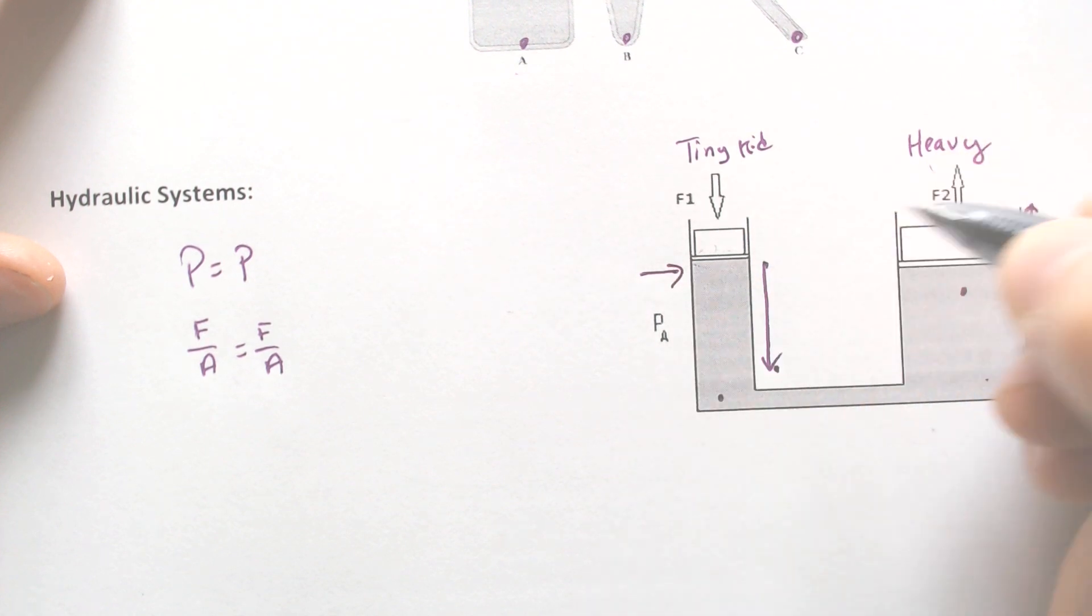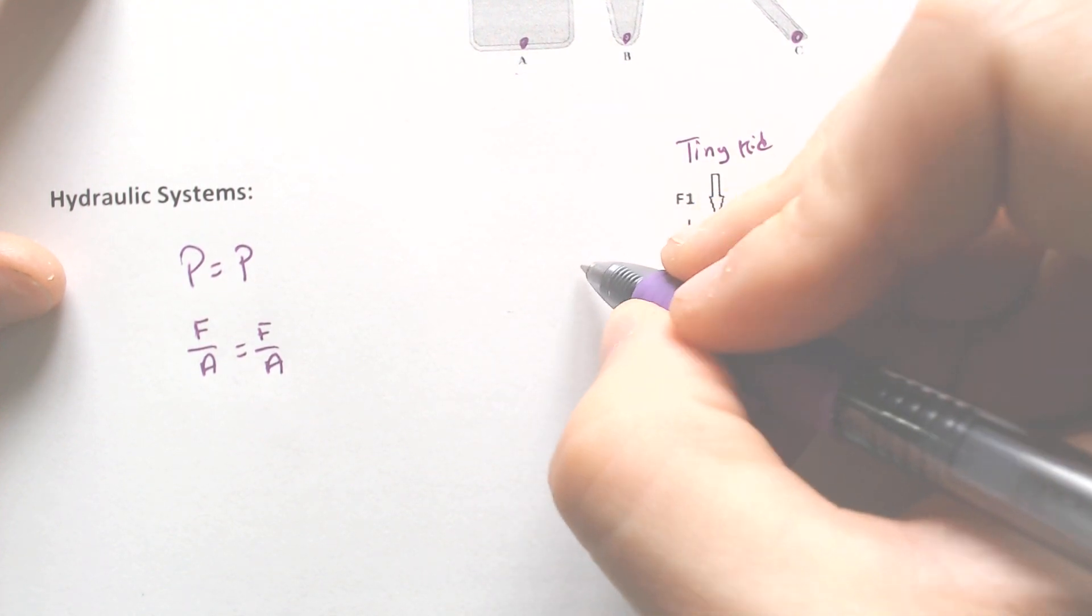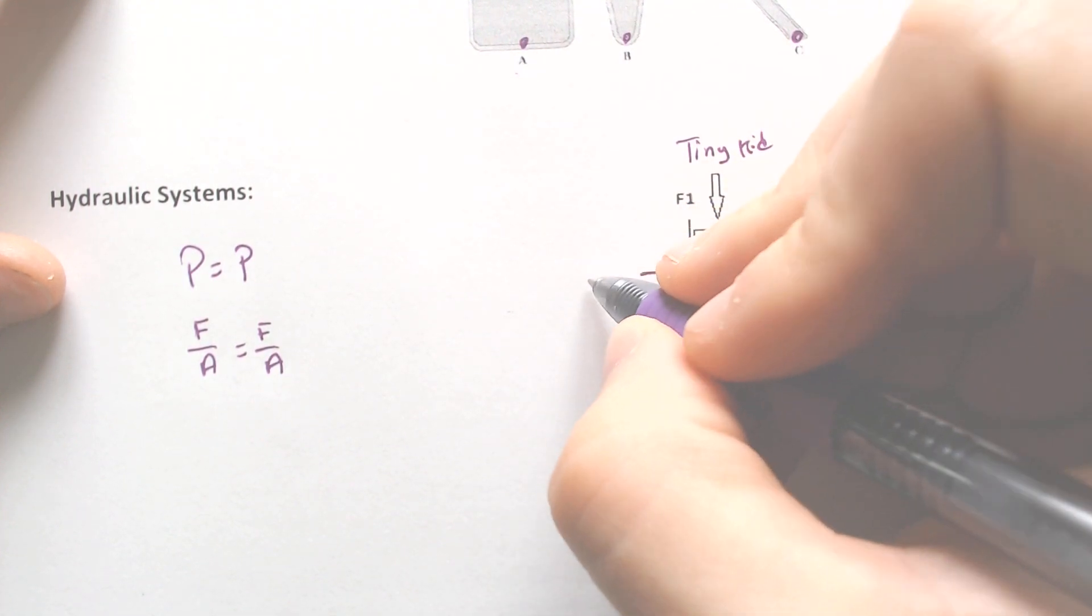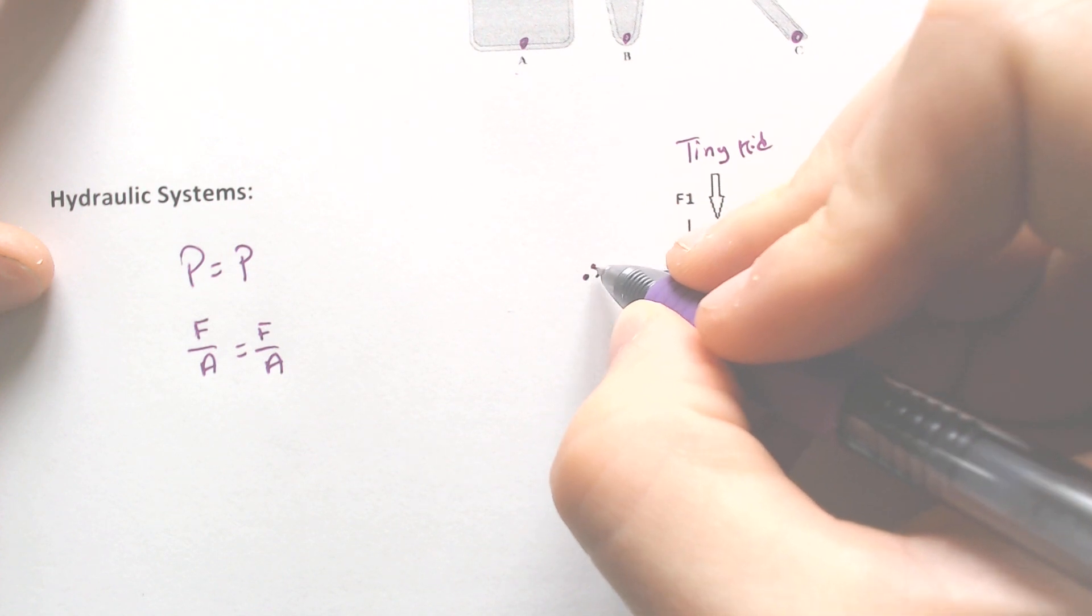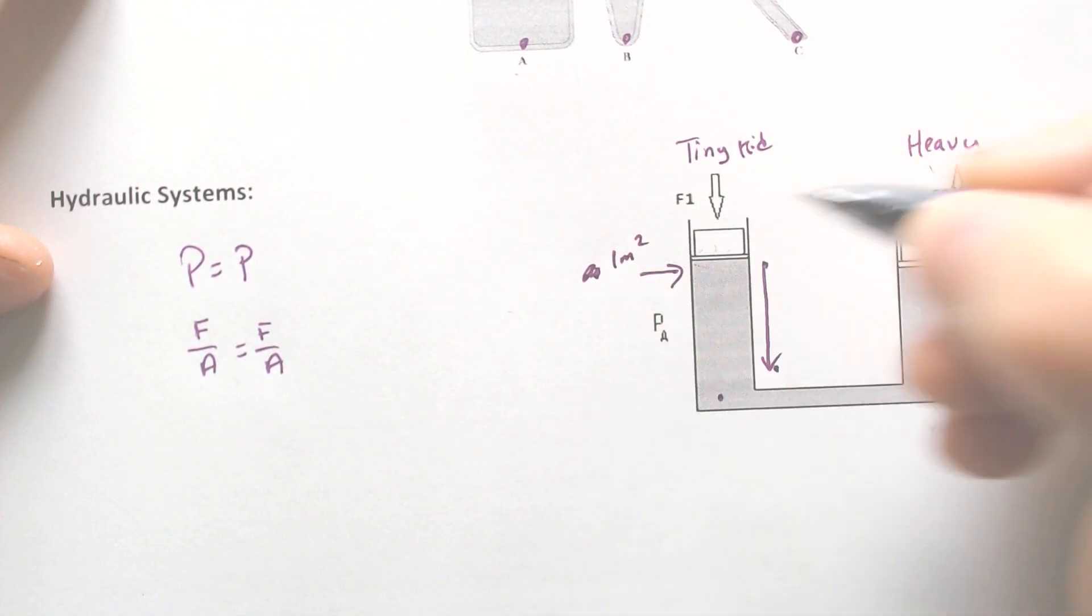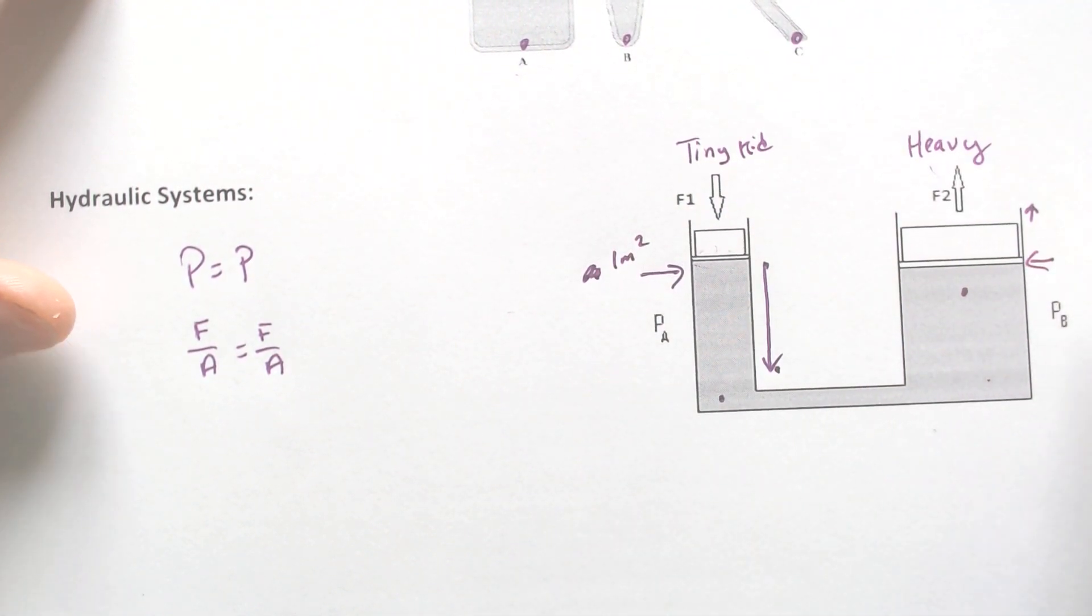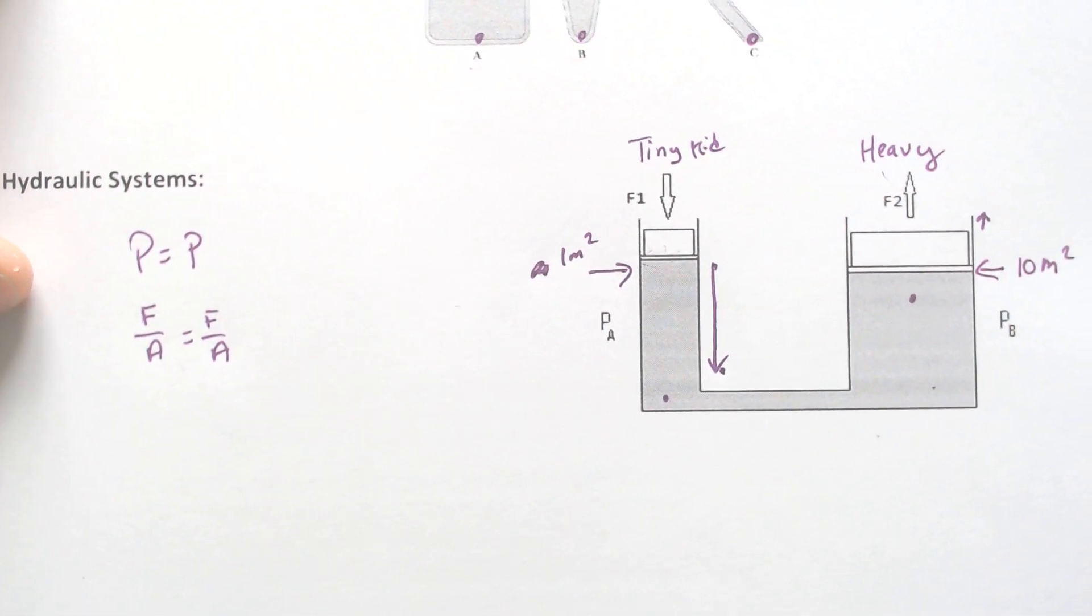So let's say that this area right here is, I don't know, it's smaller. Let's say it is one meter squared. And this area right here will have to be much bigger. Let's say it is 10 meters squared.